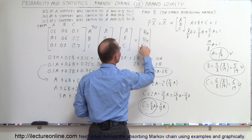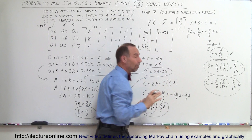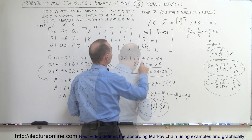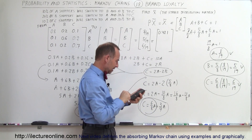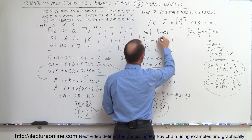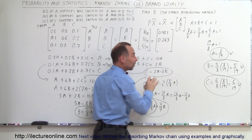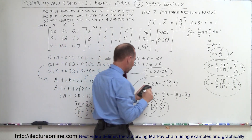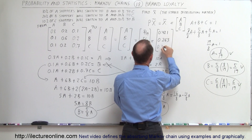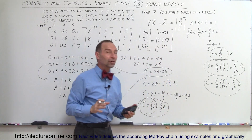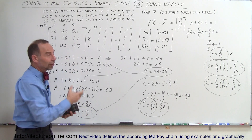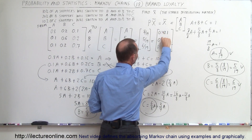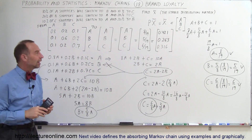Converting to decimals: B = 5/19 ≈ 0.263, so 26.3% of customers stay at store B. And 6/19 ≈ 0.316, so 31.6% of customers will eventually remain at store C. All three values add up to 1, confirming the result is correct.